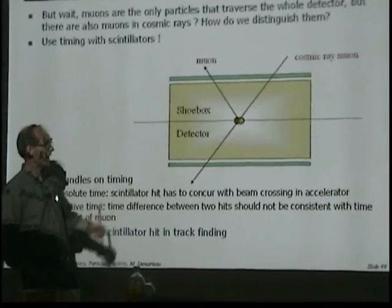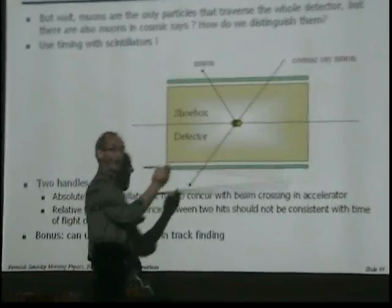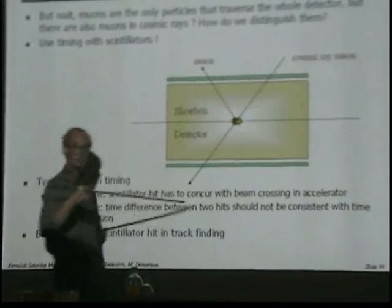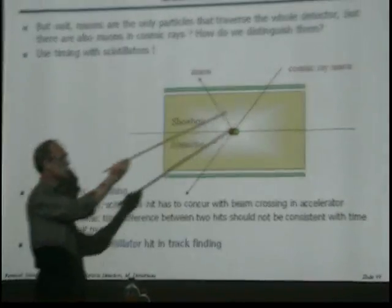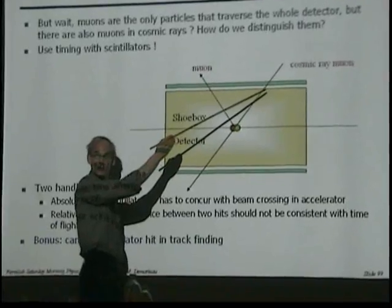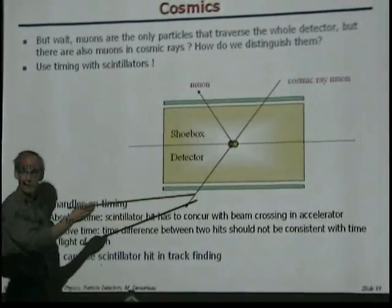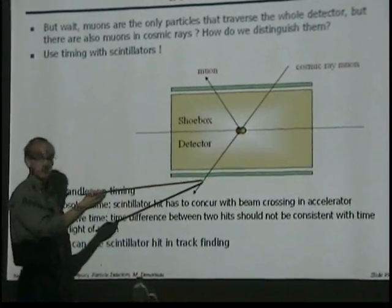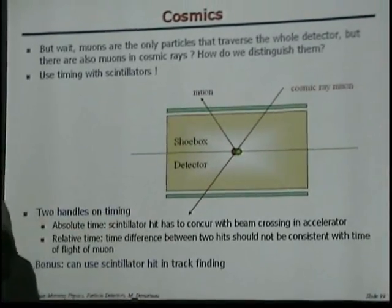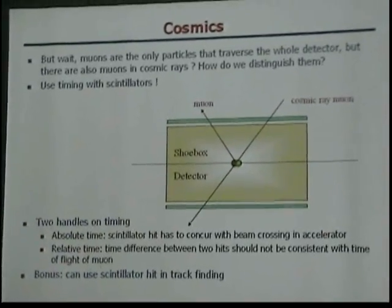The other handle is if you have a cosmic ray muon that goes from the top to the bottom, you have the absolute time of this hit, but you also have the time difference. And if the time difference between these two hits corresponds to the speed of light, you know it was a cosmic.